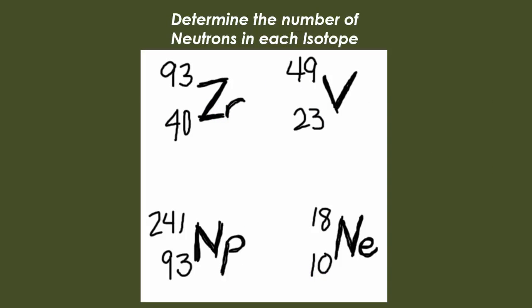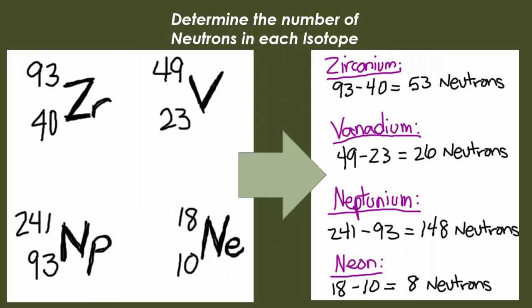Right now, we want you to pause the video and, looking at these isotopes, tell us how many neutrons are in these four different samples. You'll notice when you look at the math on the right-hand side, you're taking the mass number — or the isotopic mass — and subtracting the atomic number from it. For zirconium-93: 93 minus 40 gives 53 neutrons. For vanadium-49: 49 minus 23 gives 26 neutrons. For neptunium-241: 241 minus 93 gives 148 neutrons. And for neon-18: 18 minus 10 gives only 8 neutrons.